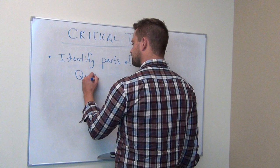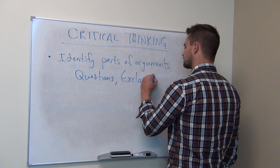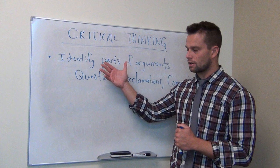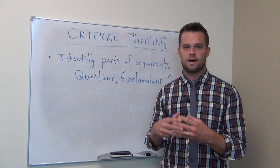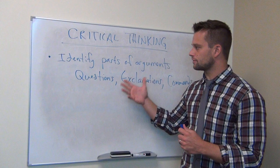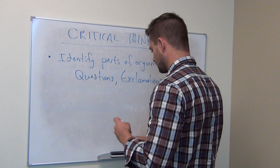For example, questions, exclamations, and commands are not forms of sentences that should be rationally taken into account as part of an argument. So whenever somebody asks you a rhetorical question, that question in itself cannot be supporting evidence for their argument, because questions are neither true nor false. The same goes with commands and exclamations. Critical thinkers are able to break down arguments into their component parts.